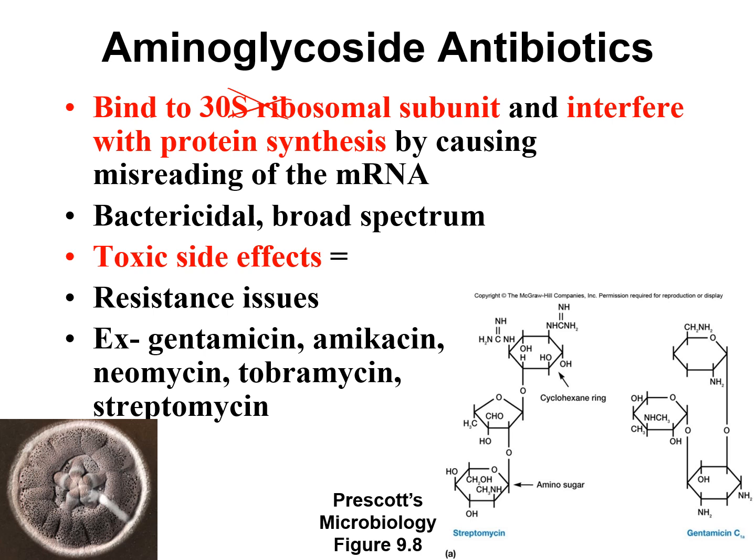The aminoglycoside antibiotics include quite a few which you don't need to memorize, but if you're working in a hospital or clinic, you might have heard of some of them: gentamicin, amikacin, tobramycin (used in eye drops), neomycin (used in Neosporin as one of three antibiotics), and streptomycin, which was the first aminoglycoside antibiotic discovered back in the 1940s.